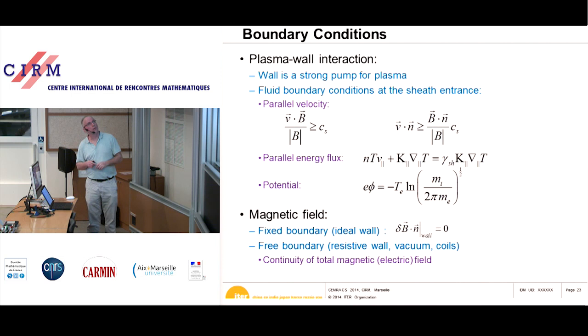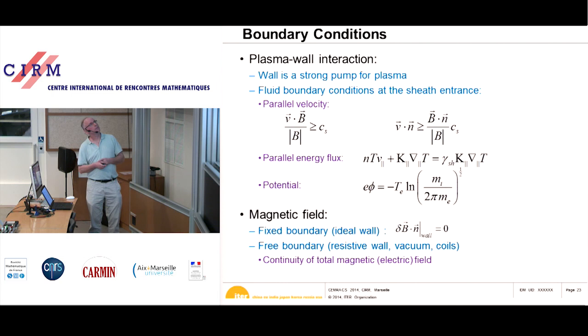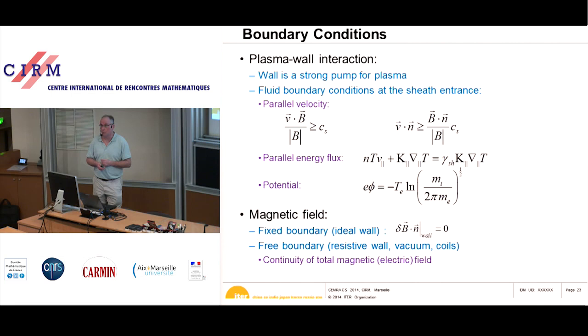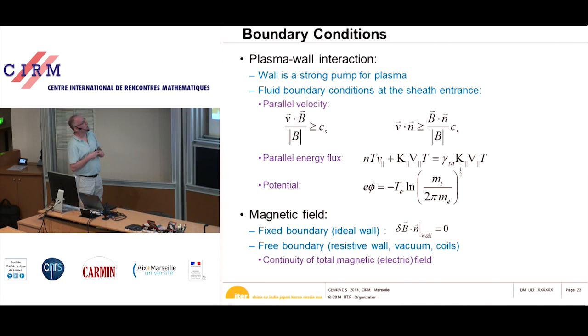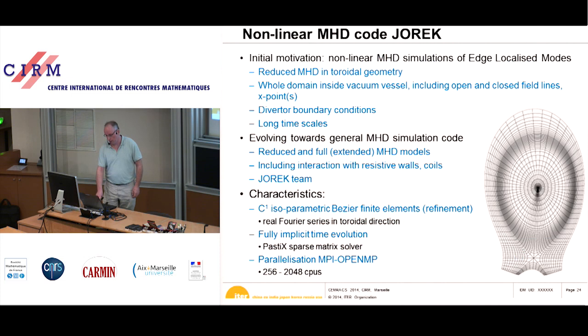The energy flux condition involves both convective and conductive parts, requiring kappa-parallel times the parallel temperature gradient to equal gamma-sheath times the conductive energy. There is also a condition on the electric potential. More complicated are the magnetic field boundary conditions. For most applications, we need free boundary calculations — solving the magnetic field evolution not just inside the plasma but up to infinity, including all resistive walls and coils.